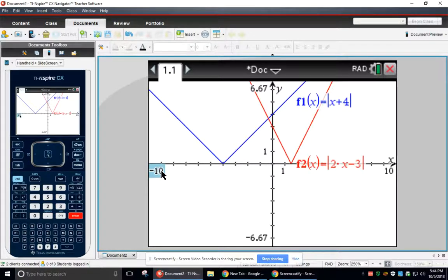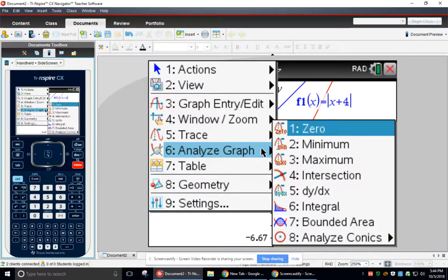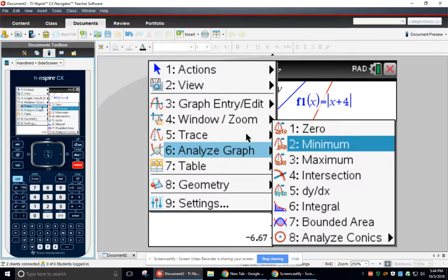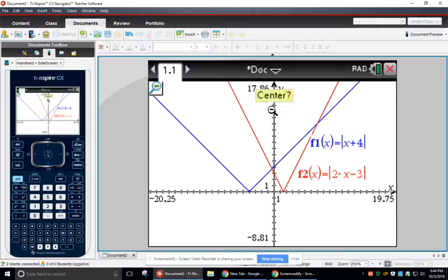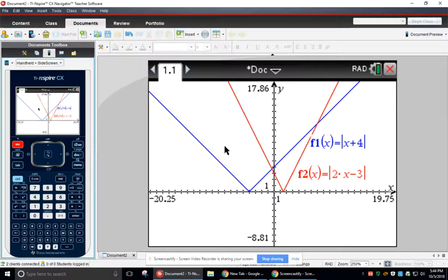So here I have my two absolute value equations. You can see they intersect right there. Sometimes they intersect twice, and so what you want to do is go to the window and zoom out just to double check. See, look, I'm glad I double checked because they do intersect twice.